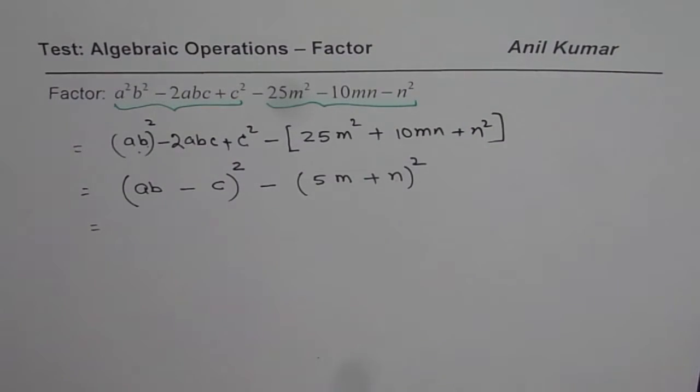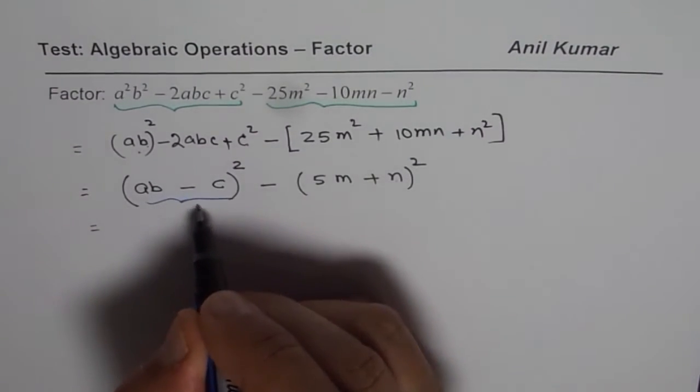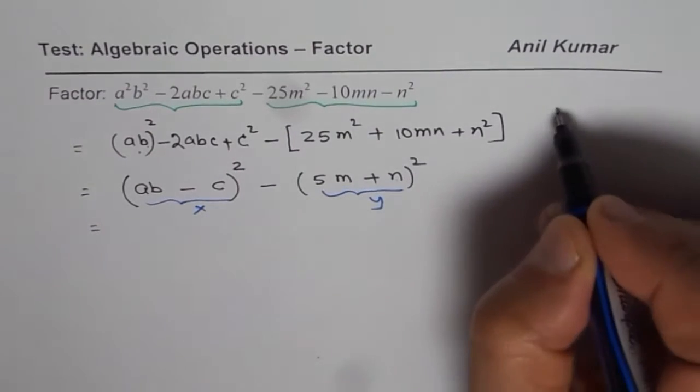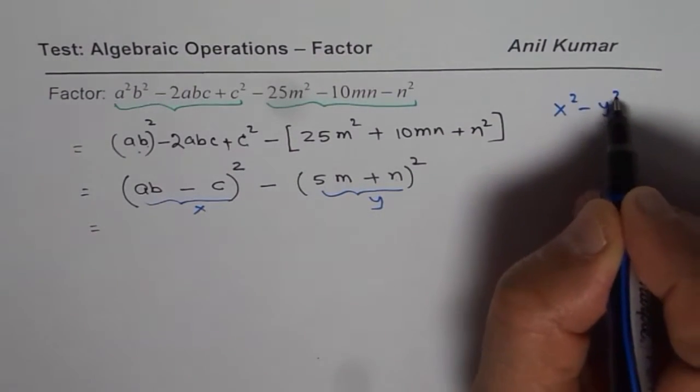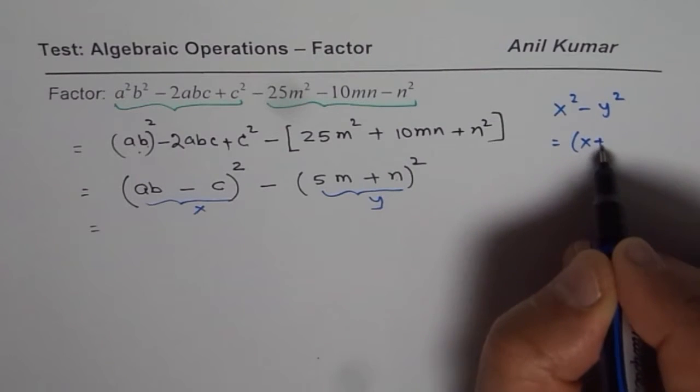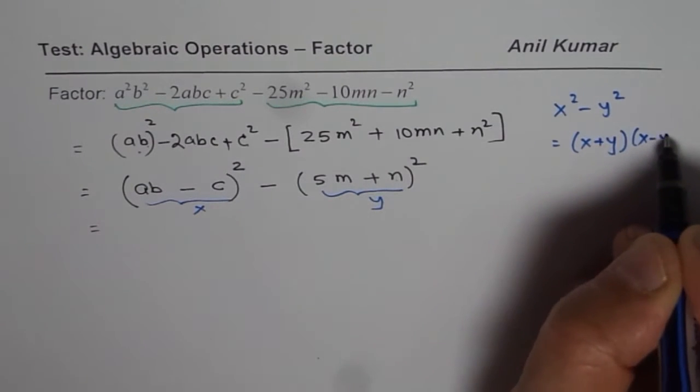Well, we can treat this term as x and that as y. So it is kind of x² - y², which could be written as (x + y)(x - y).